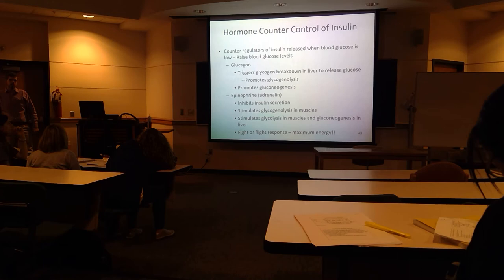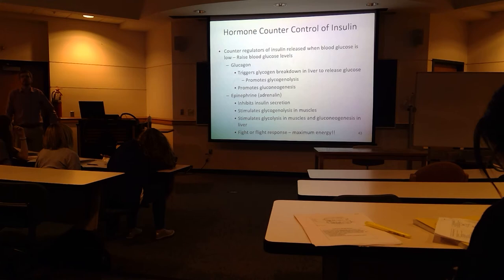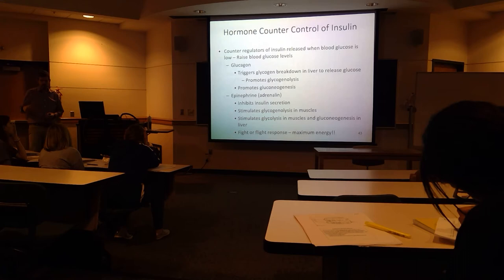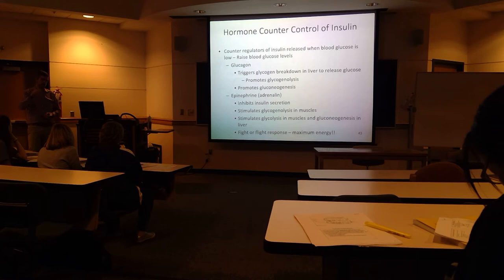In response to a student question: yes, gluconeogenesis and glycogenolysis are happening at the same time when glucagon is released. Gluconeogenesis takes non-carbohydrate molecules, processes them in the mitochondria and cytoplasm, and produces glucose that gets exported. Other glucose comes from breaking down glycogen. Both happen simultaneously when glucagon is released to get blood glucose levels back up.